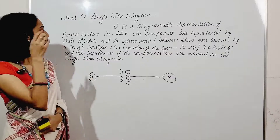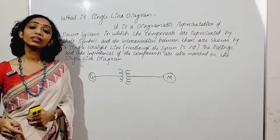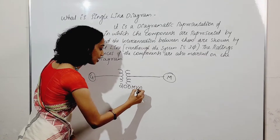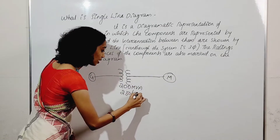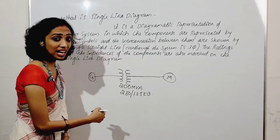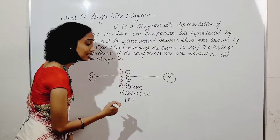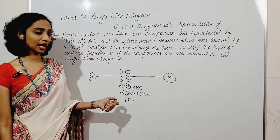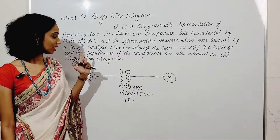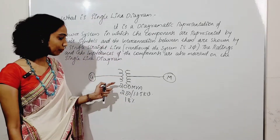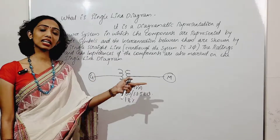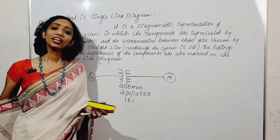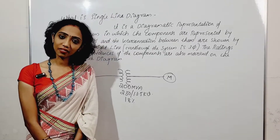The ratings and the impedances of the components are also marked on the single line diagram. For example, 200 MVA — representing the power rating — then 230 by 13.5 kV, meaning the primary and secondary voltage, and 18%, that is 0.18 per unit reactance. So we can represent the transformer, generator, and motor. This is the single line diagram, and the per unit reactance diagram is created from the numerical diagram.